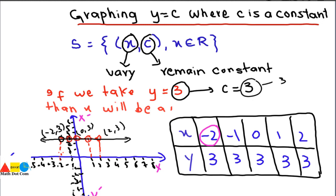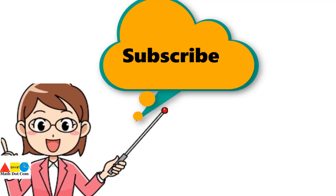The constant could be any value — 5, 6, 7, or 8. If the constant is minus 3, the line will be in the negative y-axis; if positive, it will be in the positive y-axis. So this is how you plot the graph of y equals c, where the y-coordinate (the ordinate) is constant and x is varying. Thank you for watching — please subscribe to our channel for more updates.